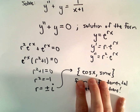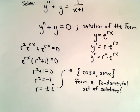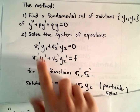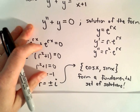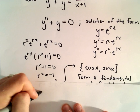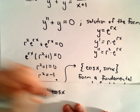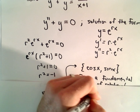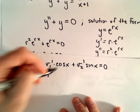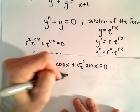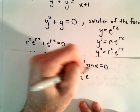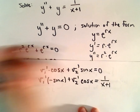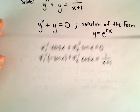Now we're at the situation where we were in the previous example — we've got our fundamental set of solutions. So we simply have to solve the system of equations to find our other solution. We've got V1 prime times cosine x plus V2 prime times sine of x, set equal to zero. Then V1 prime times negative sine x plus V2 prime times cosine x equals f of x, which is 1 over x plus 1.